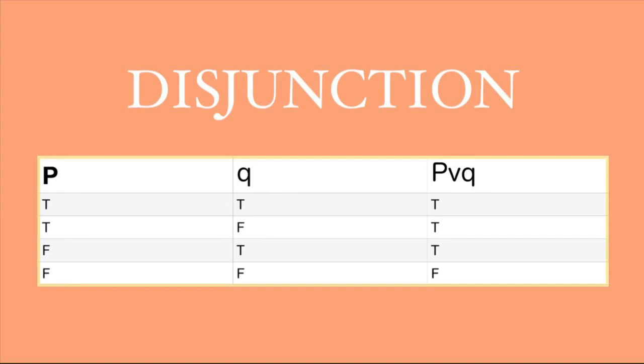In the first line, both are true, so the result is true. In the second scenario, one is true and the other is false, but if the statement is one thing or another and one of them is true, then it's true. Third is false and true, so true. Lastly, if both are false, then the answer would be false.